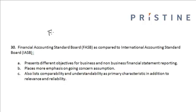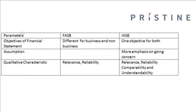There are two primary standard-setting bodies: the Financial Accounting Standard Board and the International Accounting Standard Board. There are differences in the approaches of both bodies, and these differences are listed in the following table. The objective of the financial statement under the Financial Accounting Standard Board is different for business and non-business.